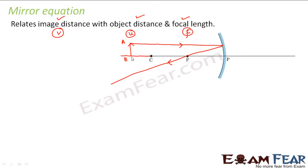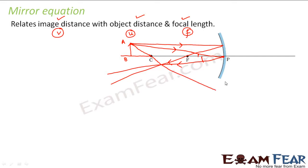This is the first ray of light. There is another ray of light which falls obliquely on the pole of the mirror; after reflection it gets reflected obliquely. Again, there was another rule which stated that a ray of light which passes through the center of curvature when it falls on the mirror will go back in the same path. All three reflected rays meet at one point — that is where the image is formed.